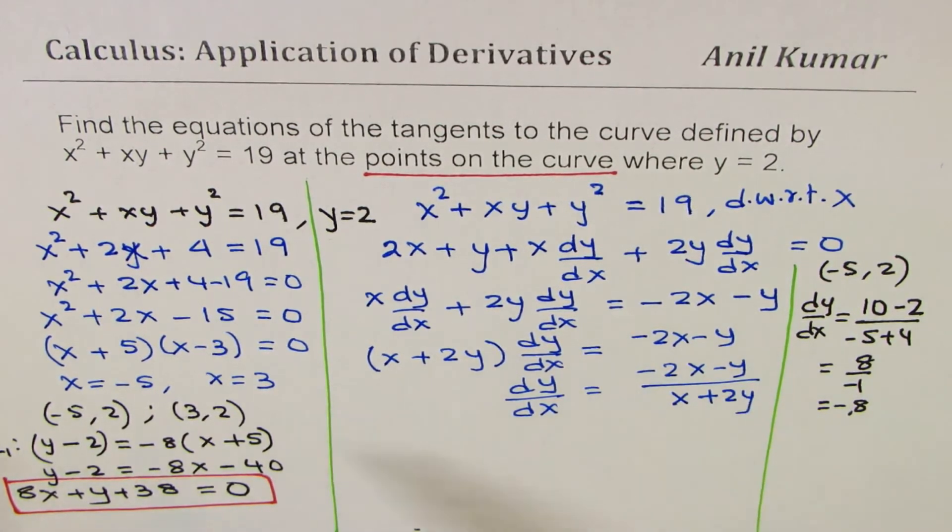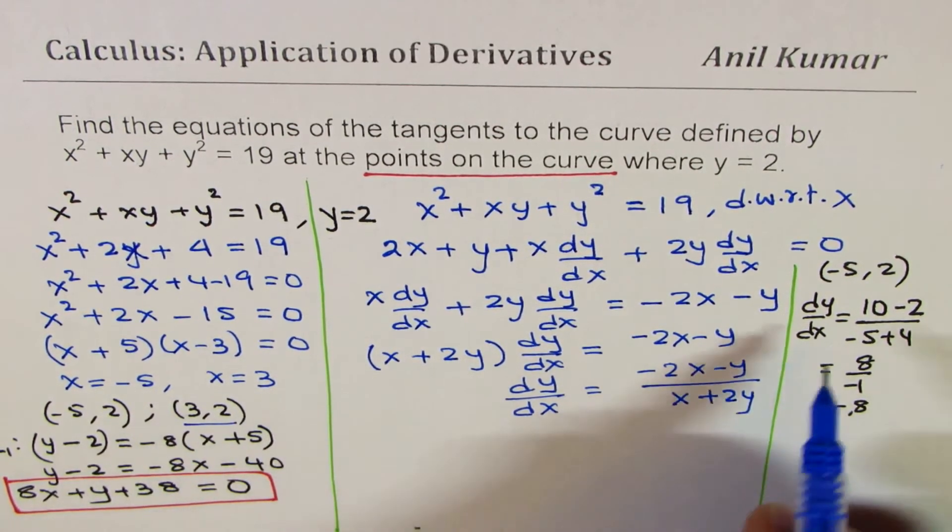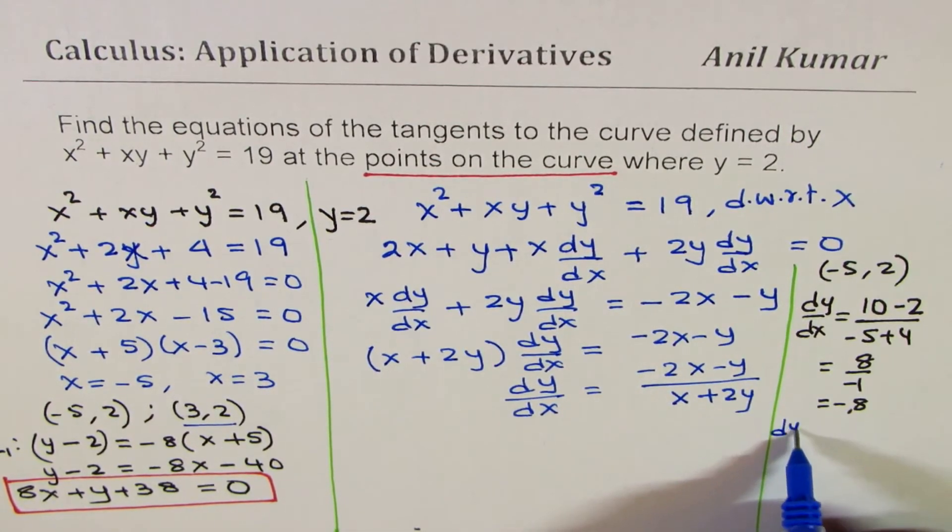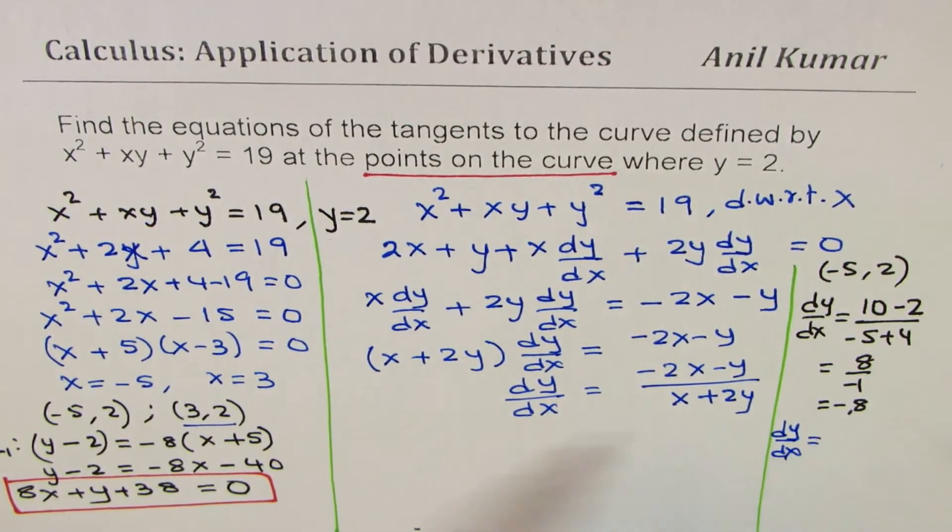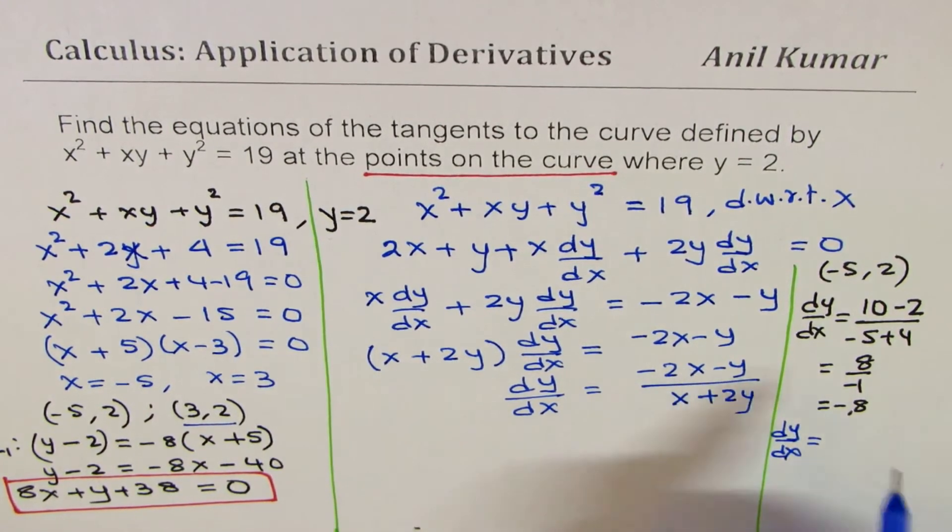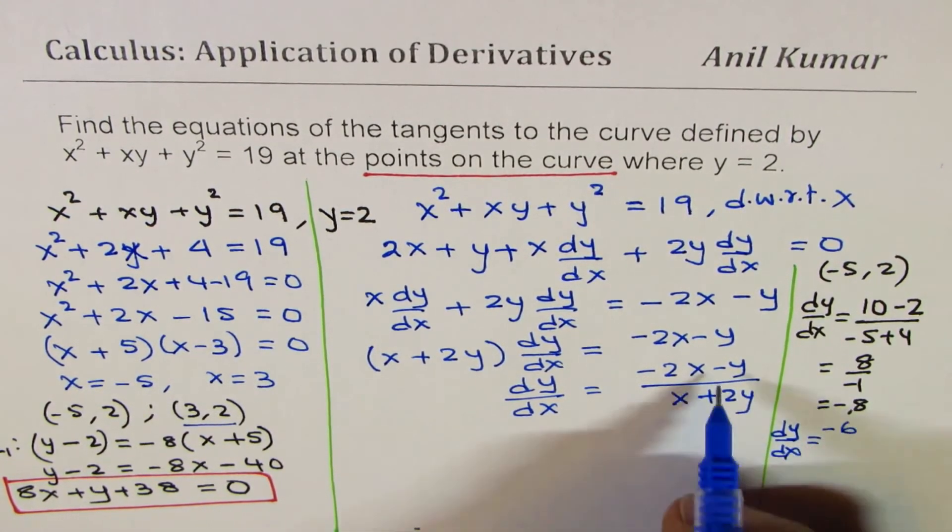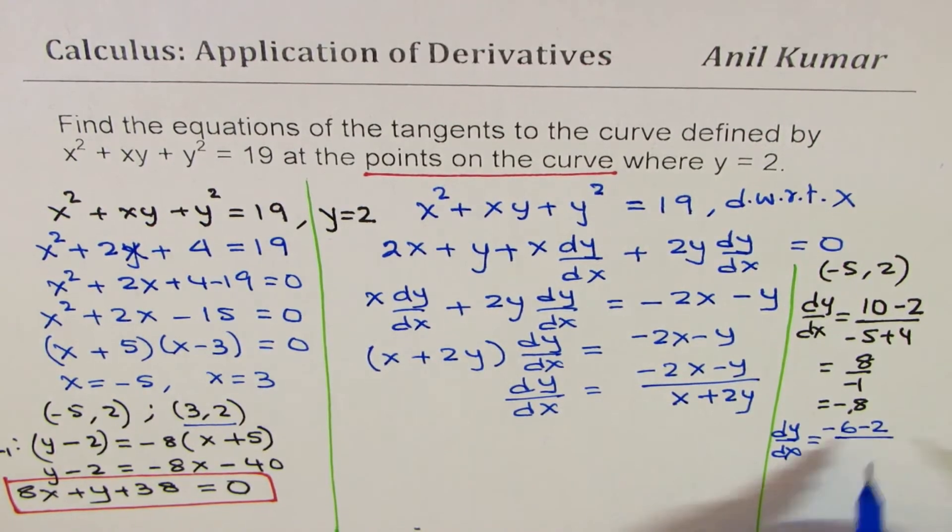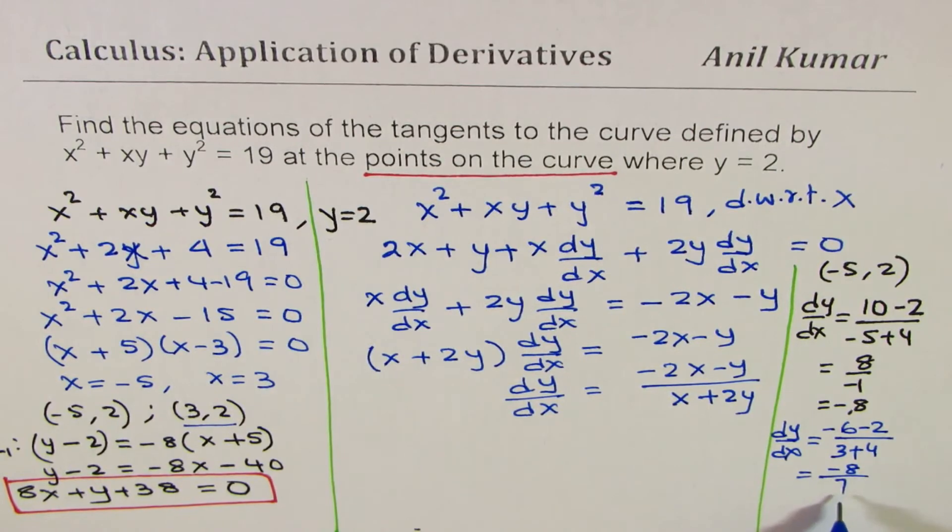Now, let us substitute the second point, which is (3, 2) here. So, we get dy/dx as, here, if I write 3 and 2. So, 3 × 2 is 6 - 6, that is, -2 divided by 3 + 4. So, that gives us -8 over 4 plus 3 is 7. So, -8/7 is the slope.